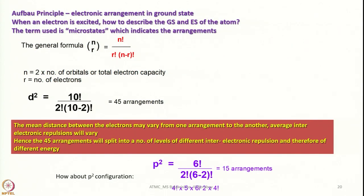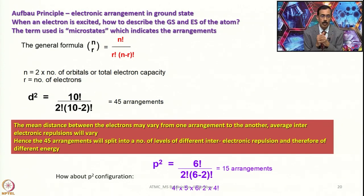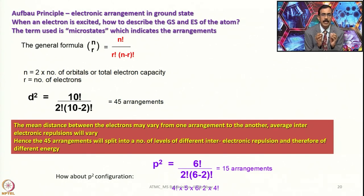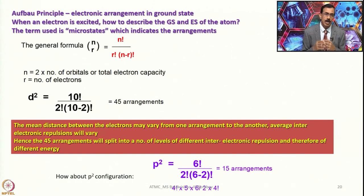Let us try to understand what a microstate is. Microstate is very important when we talk about electronic spectroscopy of metal complexes. We should recall our understanding of the Aufbau principle, which gives information about electronic arrangement in the ground state. When we arrange electrons in the ground state we follow Aufbau principle and Hund's rule, but when an electron is excited it need not follow these principles. So for an excited electron, how do we describe ground and excited states of the atom? In that case, microstates become very handy.